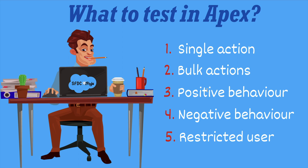Next is positive behavior — checking that everything goes right when users follow the expected path. For example, if your code involves creating an account, test that it is created properly when the user provides all necessary information. Next is negative behavior — exploring what happens when things go wrong. For example, if your code prevents adding a future date, test that it correctly stops the user and shows an appropriate error message. Finally, restricted user testing ensures that users with restricted access see the expected behavior or receive error messages.